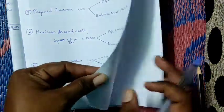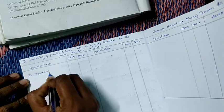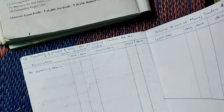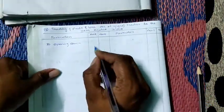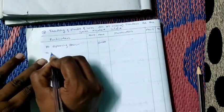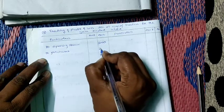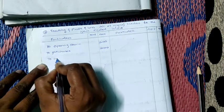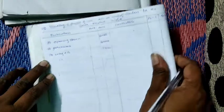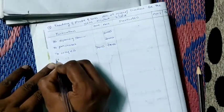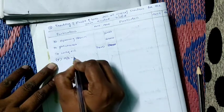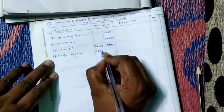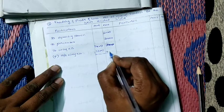Now we will prepare the trading account, P&L account, and balance sheet. First we prepare the trading account. Take opening stock first — opening stock is 6,000. Next, purchases: no returns, so take directly in the amount column. Next, wages: we have outstanding wages, so take it in inner column — wages 7,800, add outstanding wages 1,200 — total 9,000.